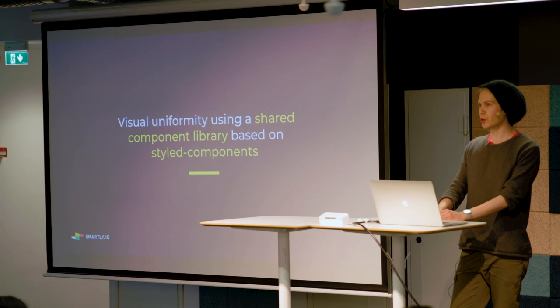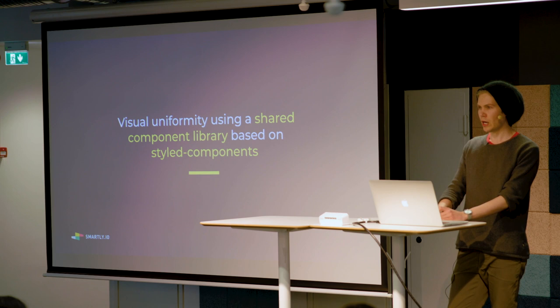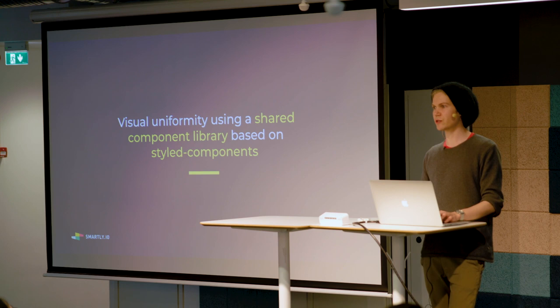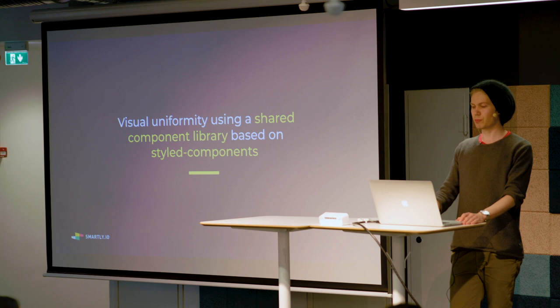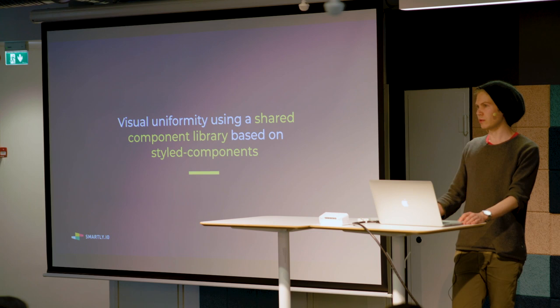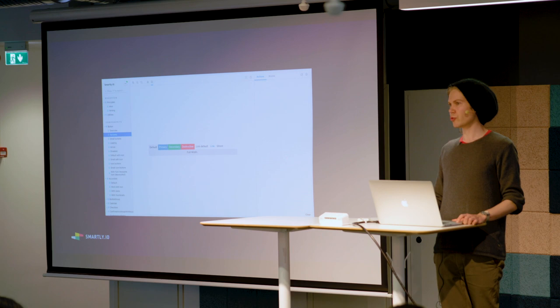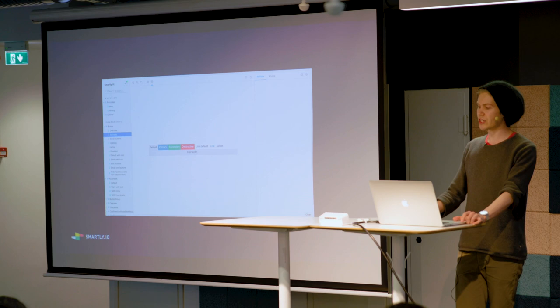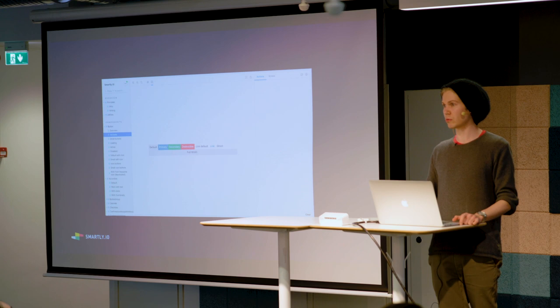For the final point of visual uniformity, we are using a shared component library based on styled-components, which is a CSS-in-JS library. The reason we chose this CSS-in-JS approach is the ease of integration with the micro frontend approach. All of our components in the component library are their own entities that do not require any specific CSS build pipelines within our micro frontends. This makes integration very easy and means we don't need to export anything other than the actual JS component when integrating micro frontends back into the parent application.